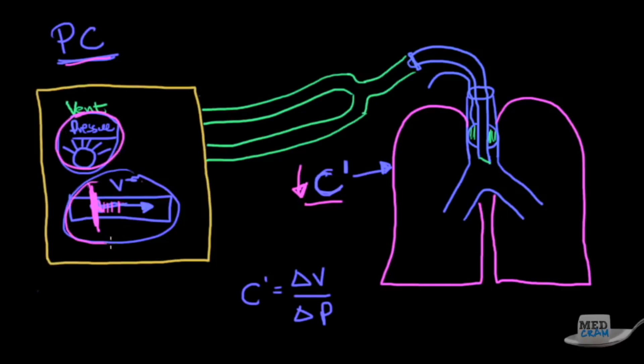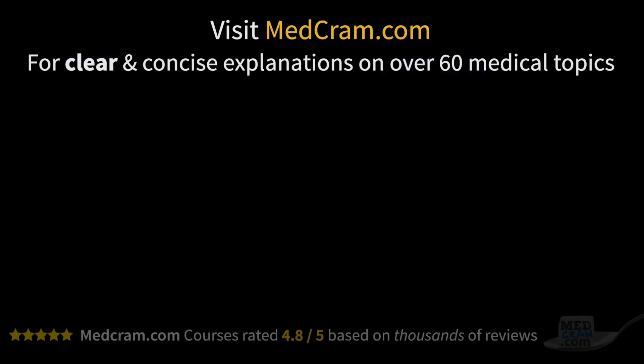So the point here is in pressure control, you're setting a pressure and your output to read is your volume. In AC, it's the flip of this. So when we come back, we'll talk about the pressure-volume relationship and a few more modes of mechanical ventilation.